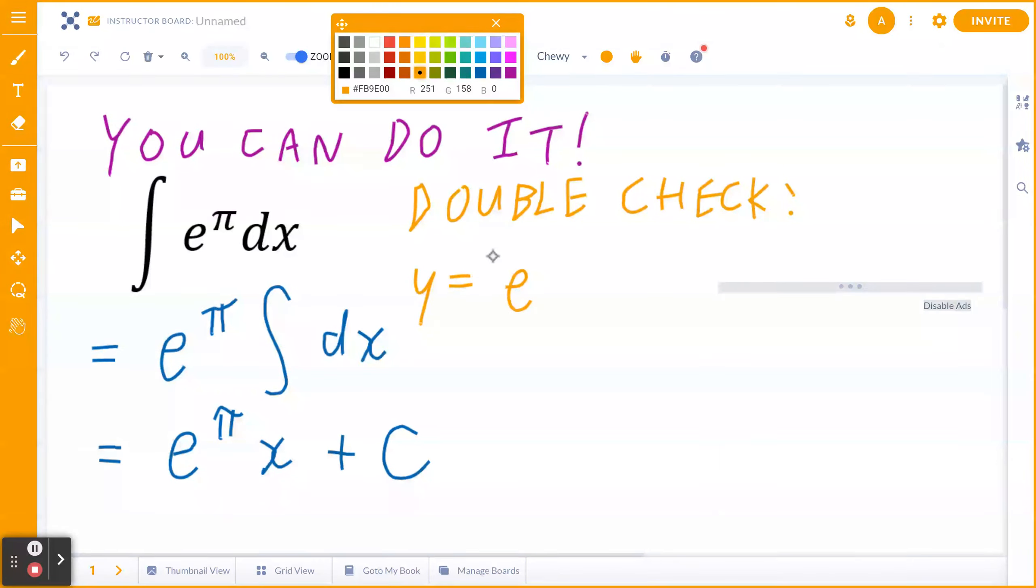Double check means if you write down y equal to e to the power of pi times x plus c, and you find the derivative dy by dx, ideally you will get the question back.